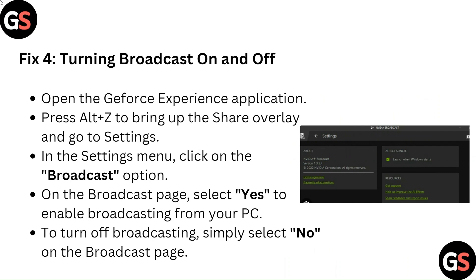Fix 4: Turning Broadcast On and Off. Open the GeForce Experience application and press Alt plus Z to bring up the Share Overlay and go to Settings. In the Settings menu, click on the Broadcast option. On the Broadcast page, select Yes to enable broadcasting from your PC. To turn off broadcasting, simply select No on the Broadcast page.